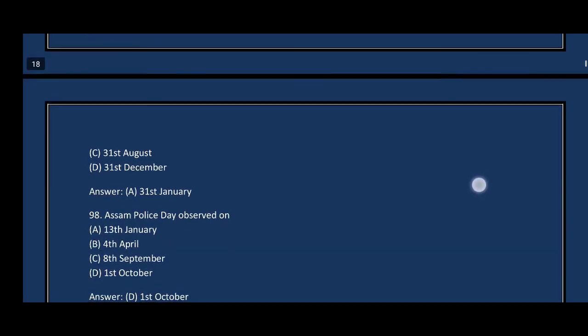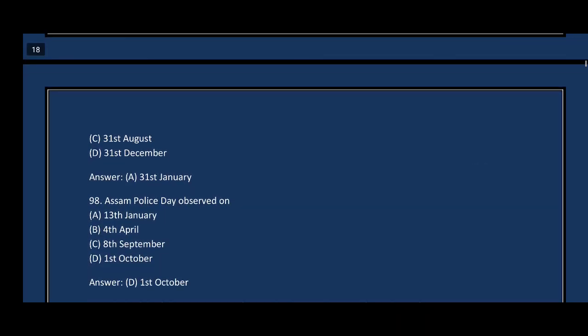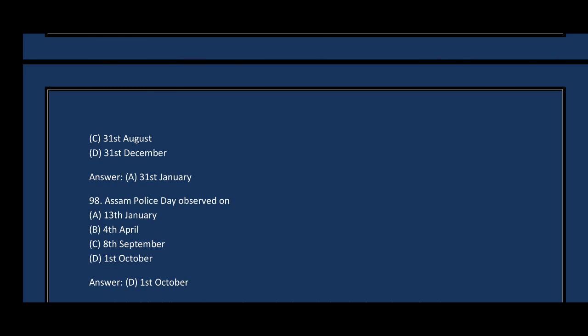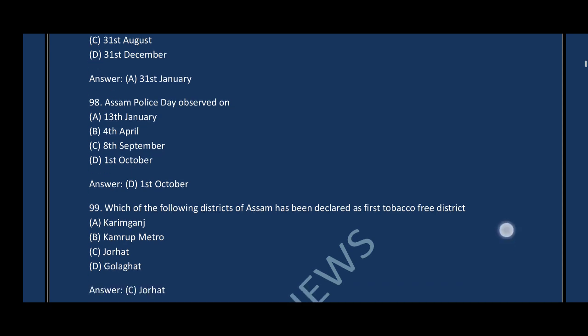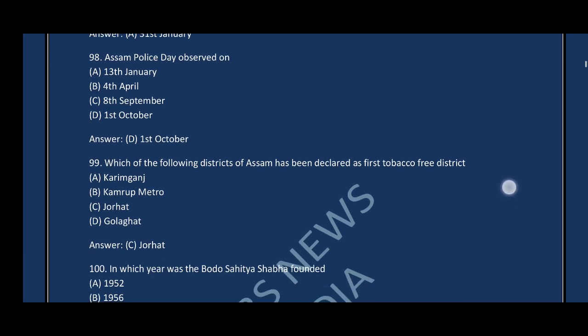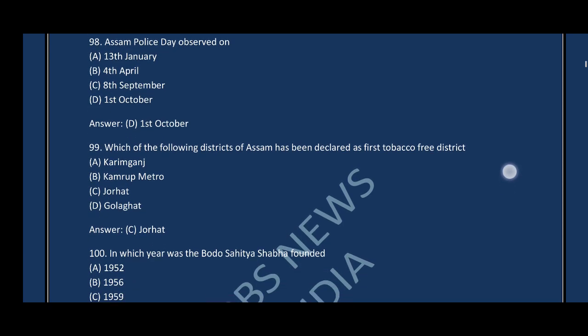Question number ninety-eight: Assam Police Day is observed on — the correct answer is option A, 1 October. Question number ninety-nine: Which district of Assam has been declared as the first tobacco-free district? The correct answer is option C — Jorhat.